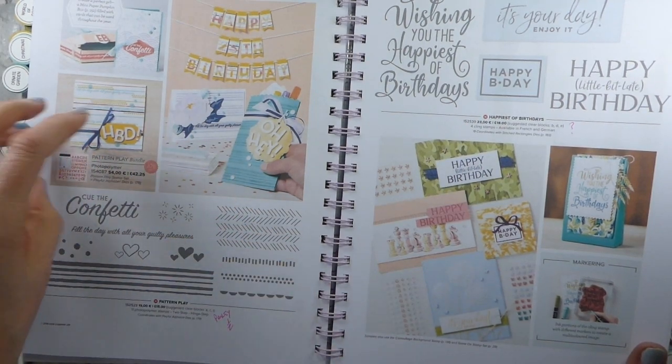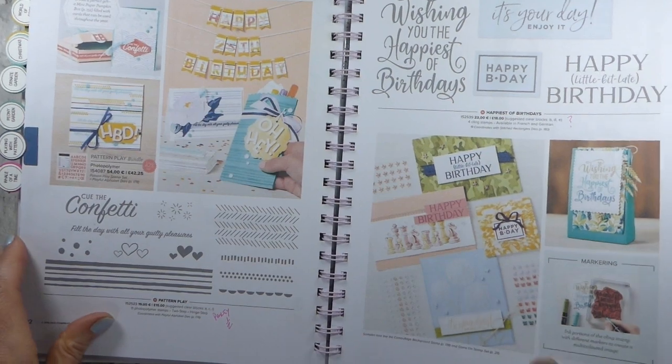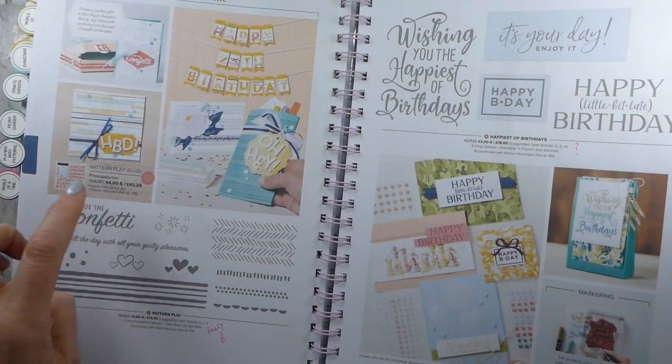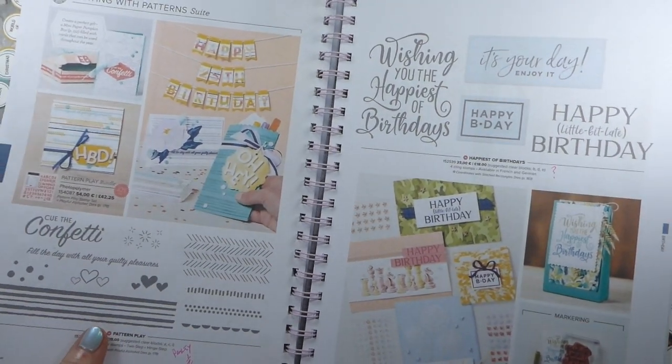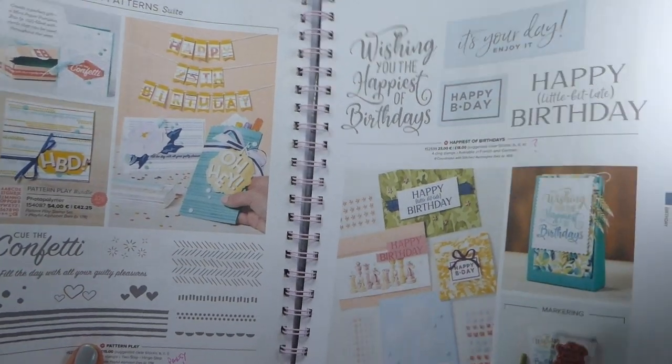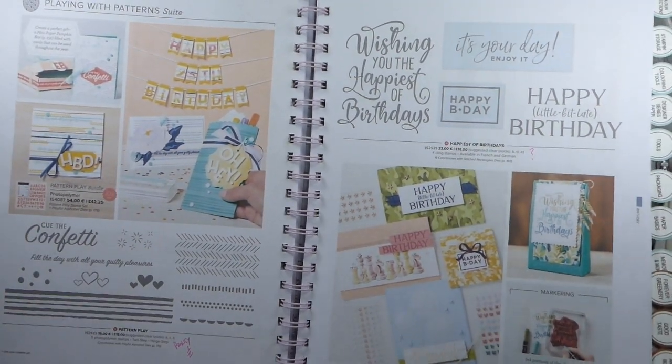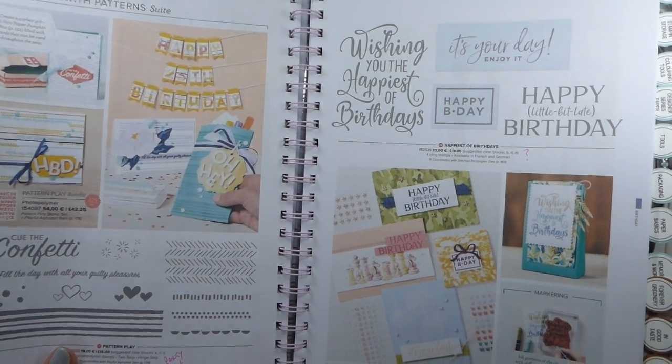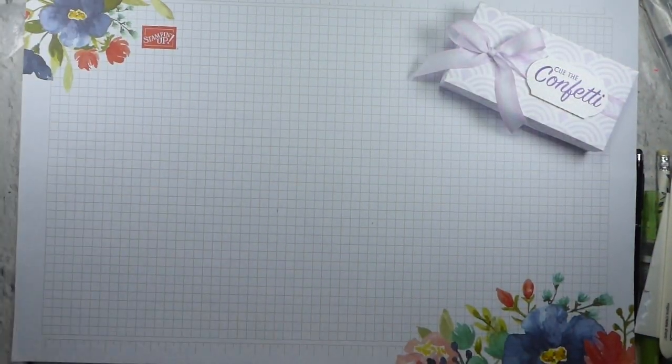So it's a really great alphabet set. And of course, remember that if you want to buy the starter kit, you could add that bundle as your free item to your starter kit. Because for the rest of June, you can add any bundle of your choice onto your starter kit at no extra cost.